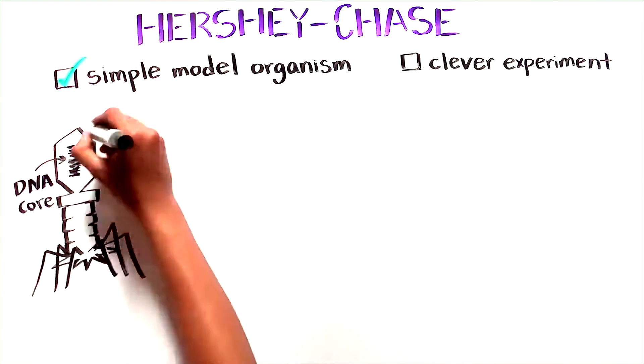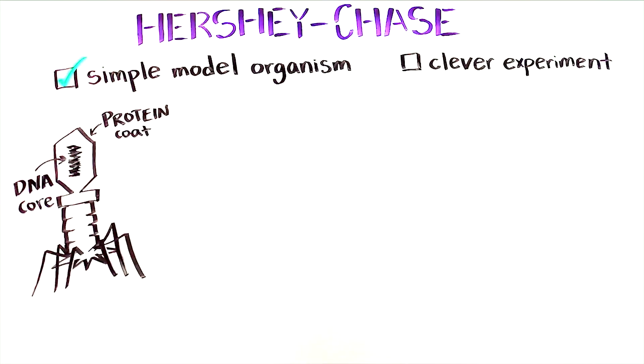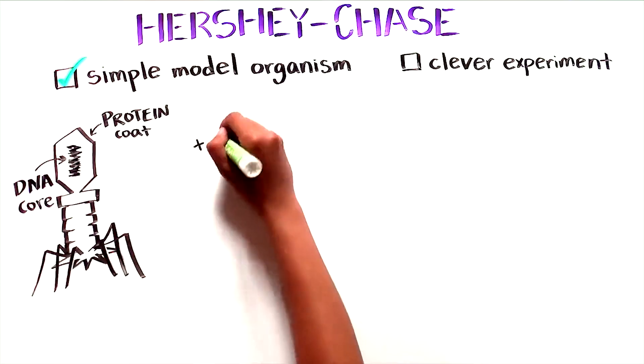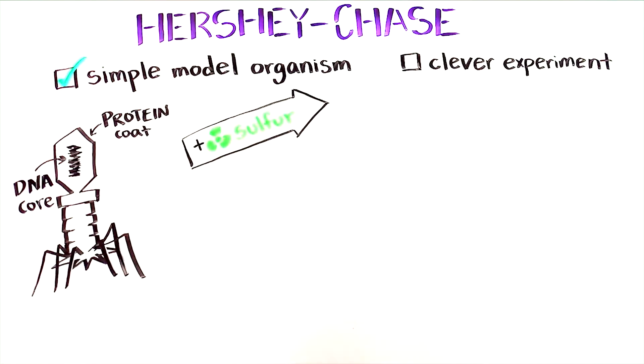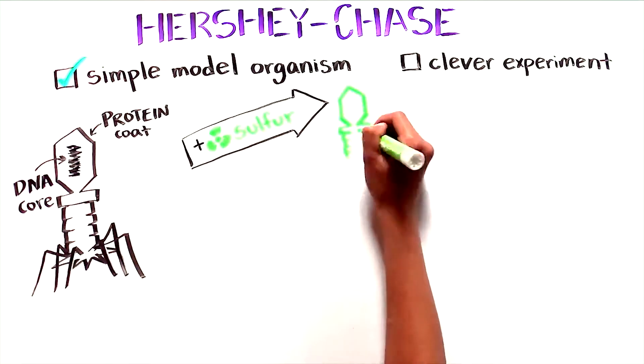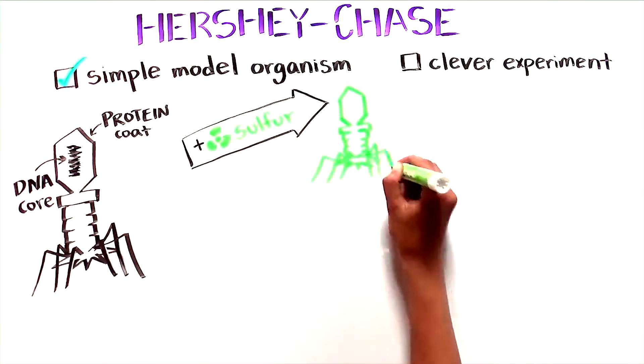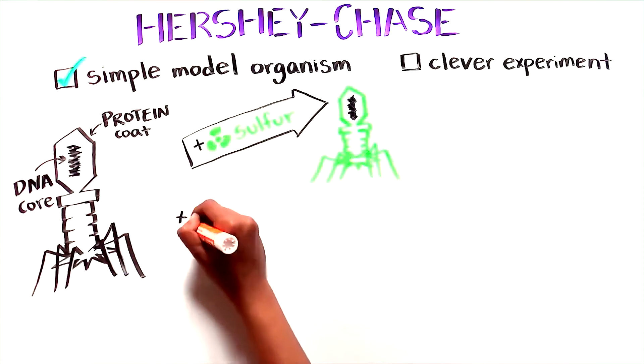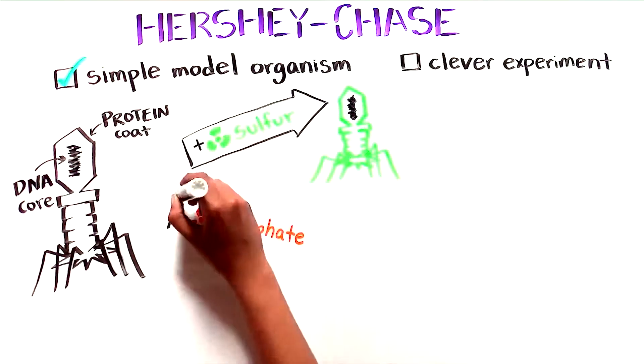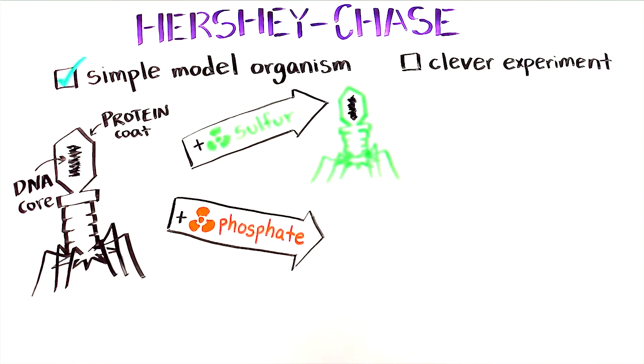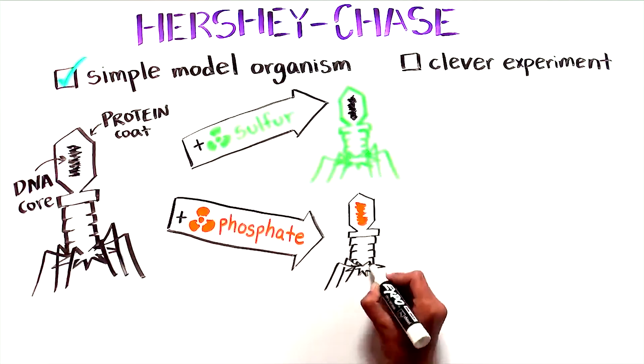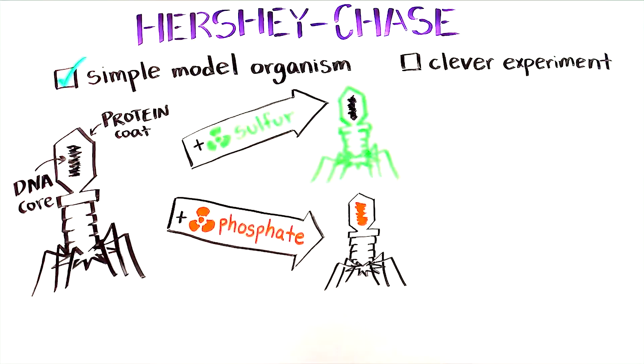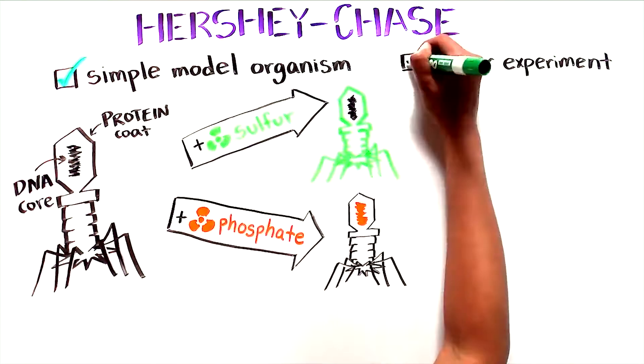Hershey and Chase needed to figure out which of the two was injected into the bacteria. They ran two experiments and in each they labeled one of the components. For this labeling they used radioactive tags, radioactive sulfur for the protein and radioactive phosphate for the DNA. This was an elegant method because phosphate is only found in DNA and not in the amino acids that make up proteins. And sulfur is only found in proteins and not DNA.